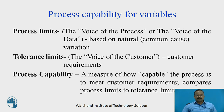Process Capability is a measure of how capable the process is to meet customer requirements; it compares process limits to tolerance limits. Process Capability is also called as Six Sigma Dash. There should be a relation between the Six Sigma Dash and the tolerance limit or specification limit, and that relation is established by means of Process Capability for Variables.